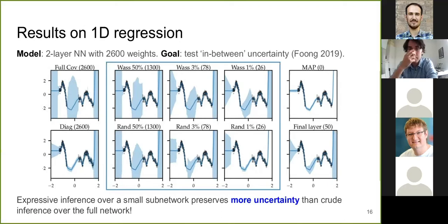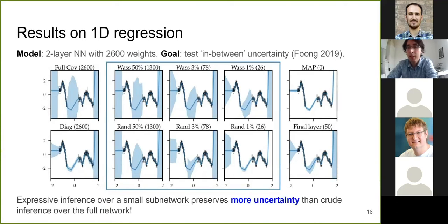Question: Do you see any patterns in the sub-network you choose — does it tend to go end-to-end, or is uncertainty more important in one specific layer? Answer: We didn't really spot anything significant. What we do find is that the last layer is usually important, but there are also weights in other layers — there's no clear pattern we could identify.